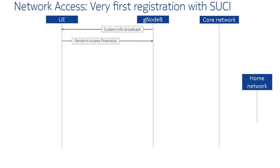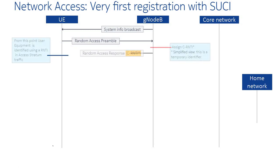Network access registration starts with a random access preamble from the UE to initiate a radio connection. During the random access procedure, the gNB cell will allocate a Radio Network Temporary Identifier, RNTI, to uniquely identify the UE in the cell.